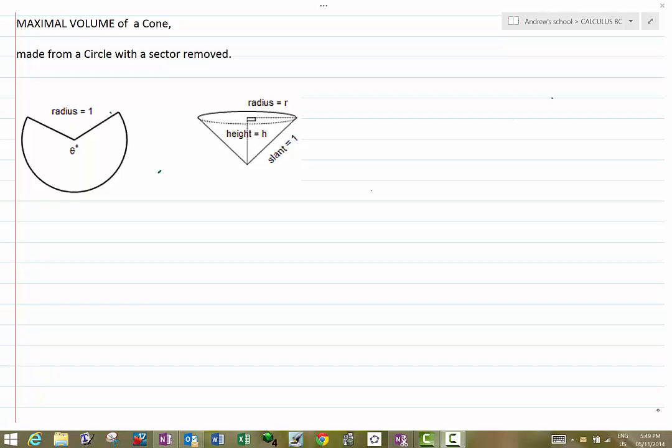Hello calculus class, so carrying on from this morning. If we look at a circle of radius 1 and we cut a sector out of it, then the arc length of what we're left with, arc length r theta, is just going to be theta.